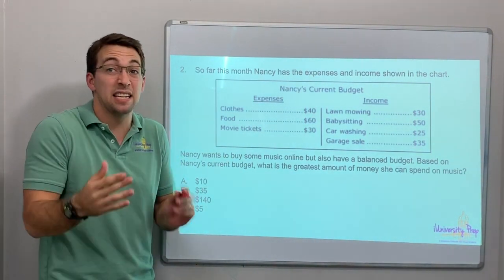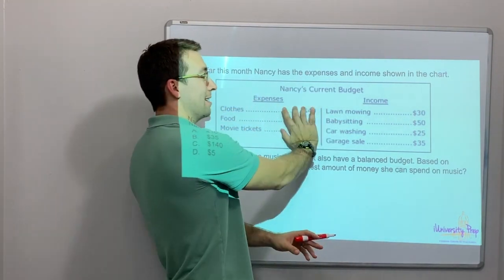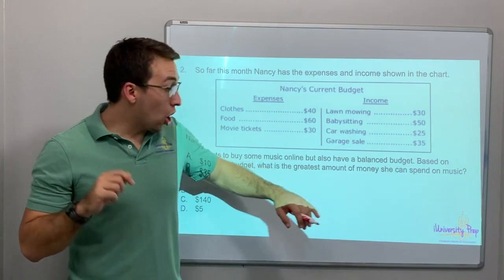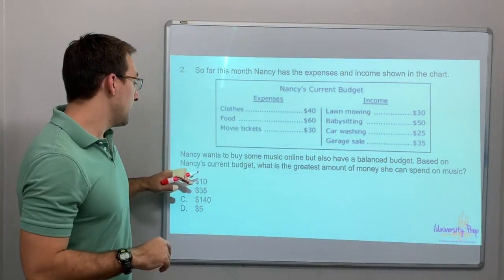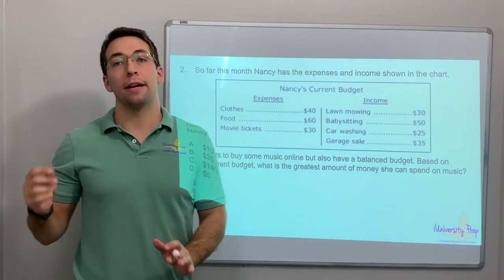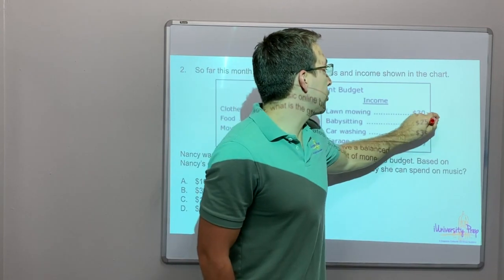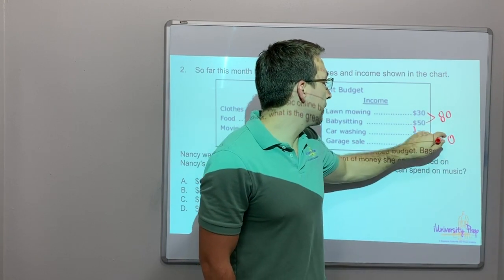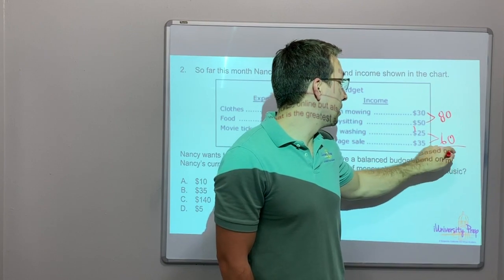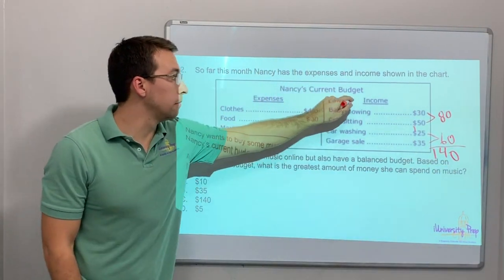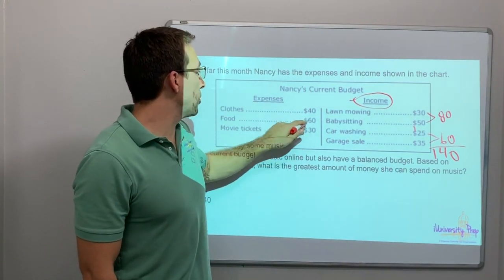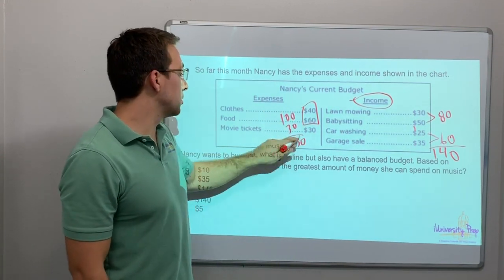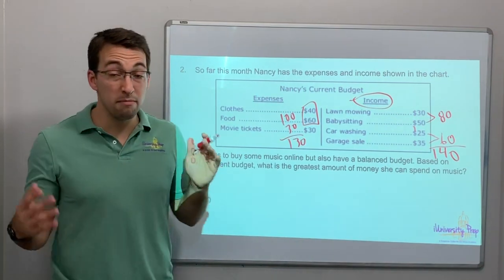Problem two: Nancy has expenses and income shown in the chart — notice they switched the order, so be careful. Nancy wants to buy some music online and also have a balanced budget. Based on her current budget, what is the greatest amount she can spend on music? Let's do income: 30 plus 50 is 80, 25 plus 35 is 60, 60 plus 80 is 140. That's her income. Her clothes and food: 100 plus 30 is 130.